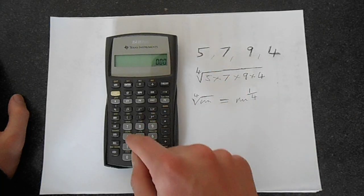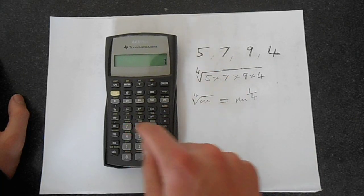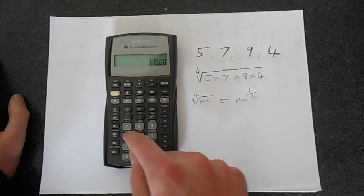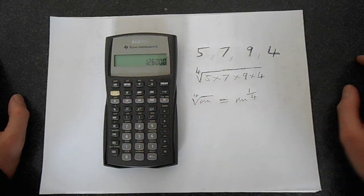So we do 5 times 7 times 9 times 4, which is 1,260.